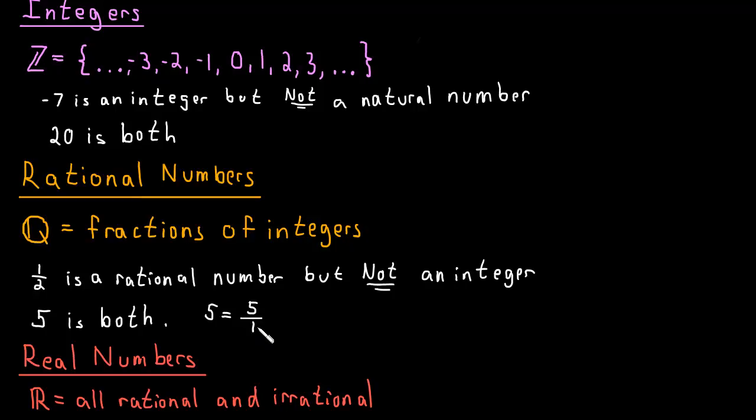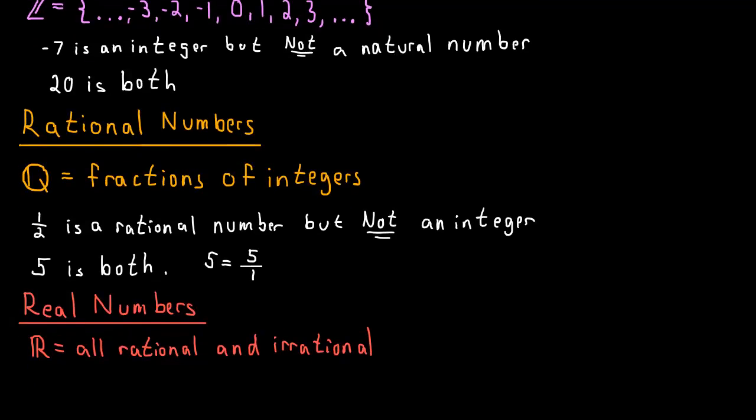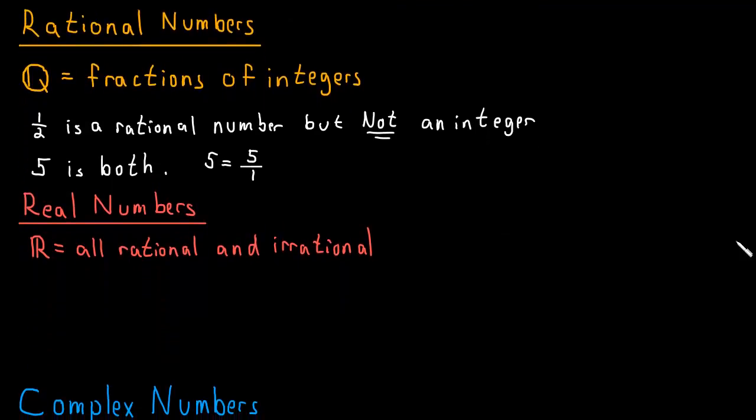But it's also a fraction, because 5 is the same thing as 5 over 1. Now 5 is an integer and 1 is an integer, so we can write 5 as a fraction of integers. So 5 is a rational number and an integer. In fact, all the integers are rational numbers.